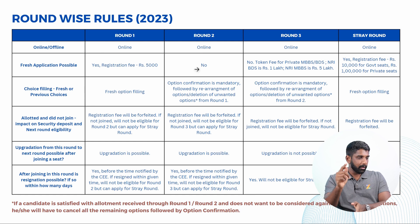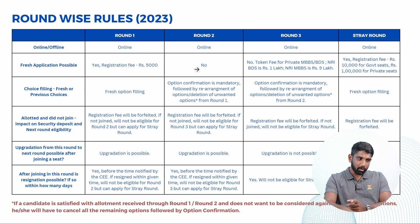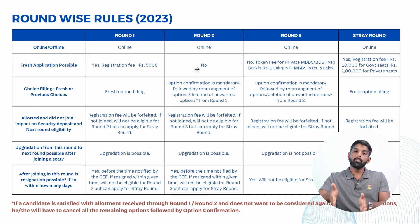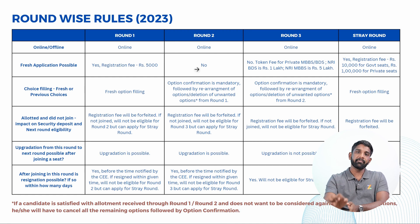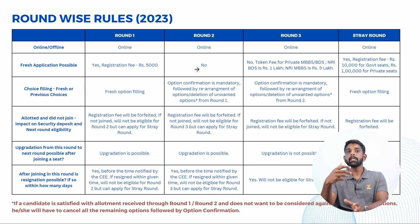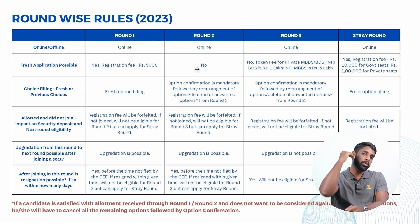All rounds in Kerala are conducted online. In Round One, a fresh application can be filled. After the fresh application process, the Round One choice filling happens. Before Round One choice filling, you will have to pay a registration fee of ₹5,000. After paying the registration fee, you'll be able to fill out the choices — entering the preference order of colleges you are interested in.